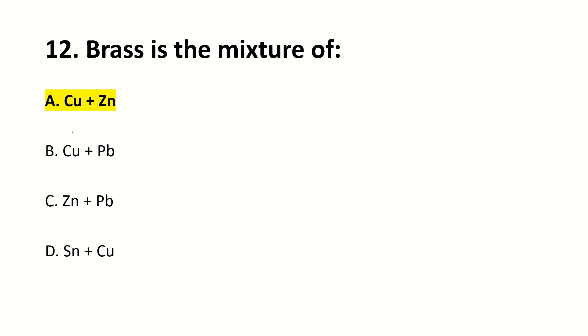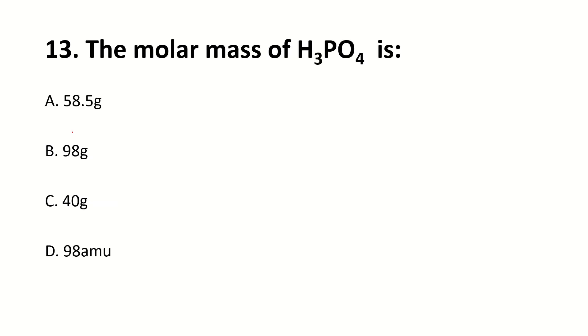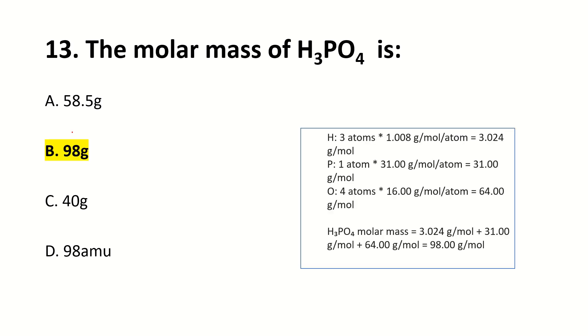The molar mass of H3PO4 is dash. The right answer is B: 98. The calculation involves hydrogen, phosphorus, and oxygen atomic masses.